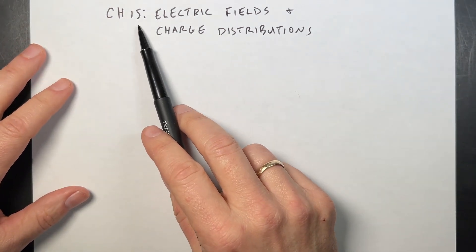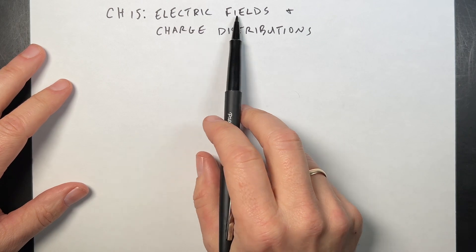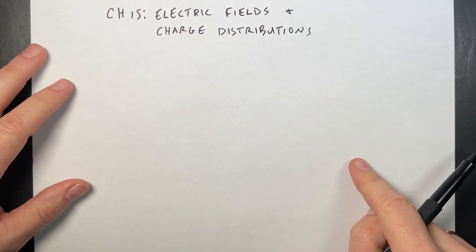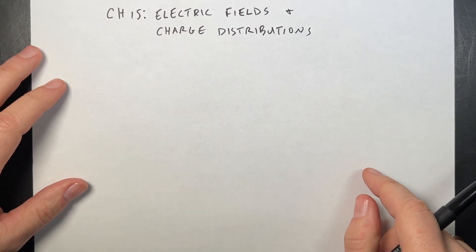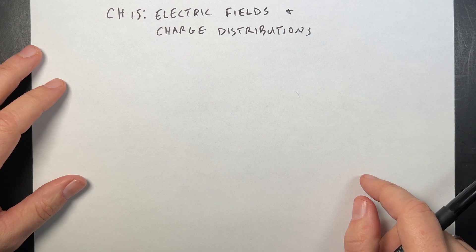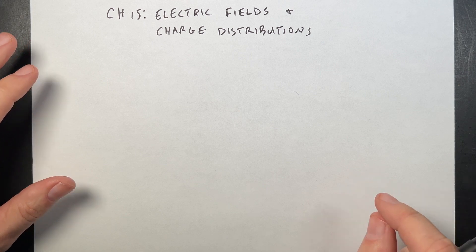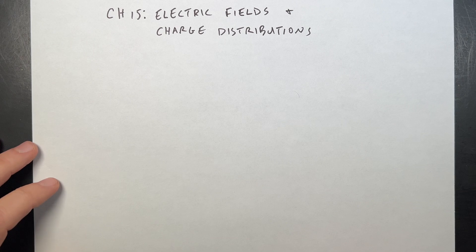This is the chapter summary for Chapter 15, Electric Fields and Charge Distributions. This is from Matter and Interactions, Wiley Publisher, author Shabai and Sherwood. This is just a summary, this is not the whole chapter.